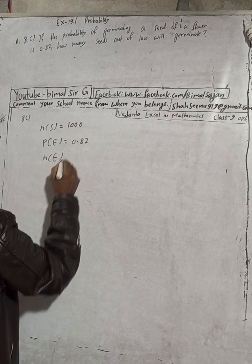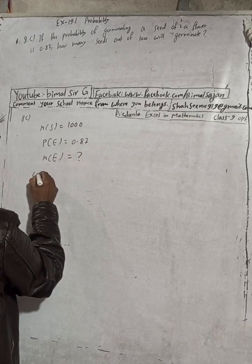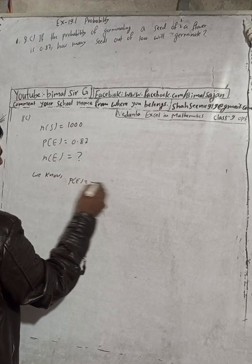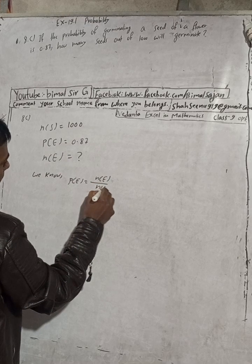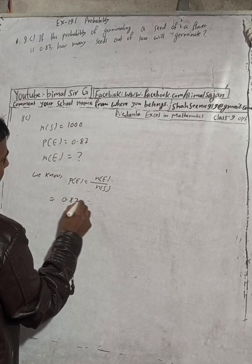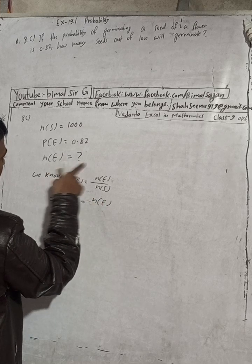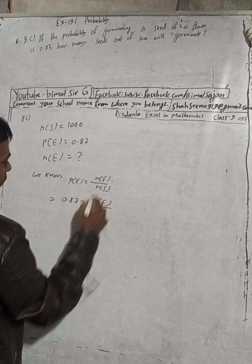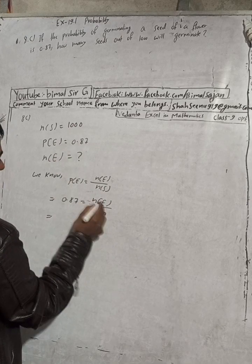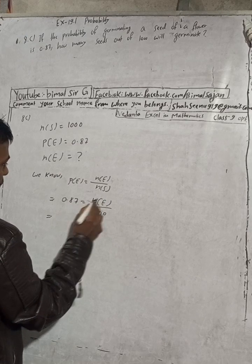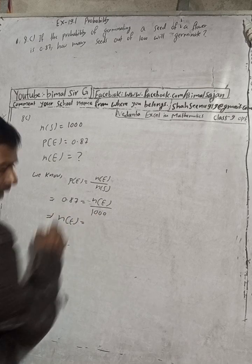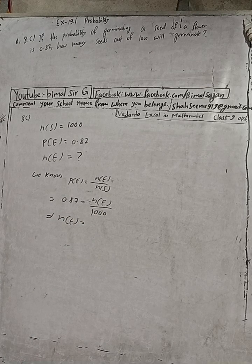Now we know P(E), probability of E, is equal to n(E) by n(S). So here is given P(E) is 0.87 is equal to n(E). We haven't, there is no data provided, so n(S) is here one thousand. Now when we do cross multiply, this will be n(E) is equal to...